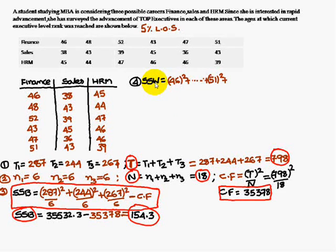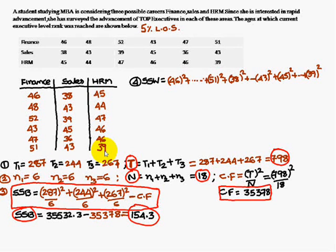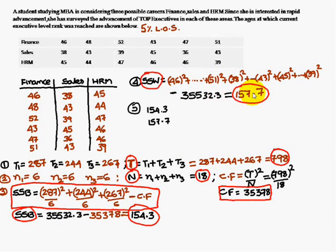Fourth step: find SSW, the sum of squares within the samples. This means 46² + 48² + ... + 51² + 38² + ... + 43² + 45² + ... + 39², then subtract the summation value of 35,532.3. Doing that gives SSW = 157.7. So SSB = 154.3 and SSW = 157.7.